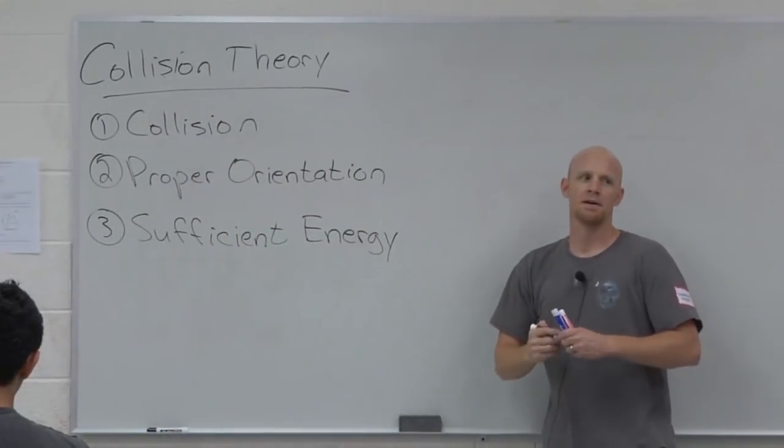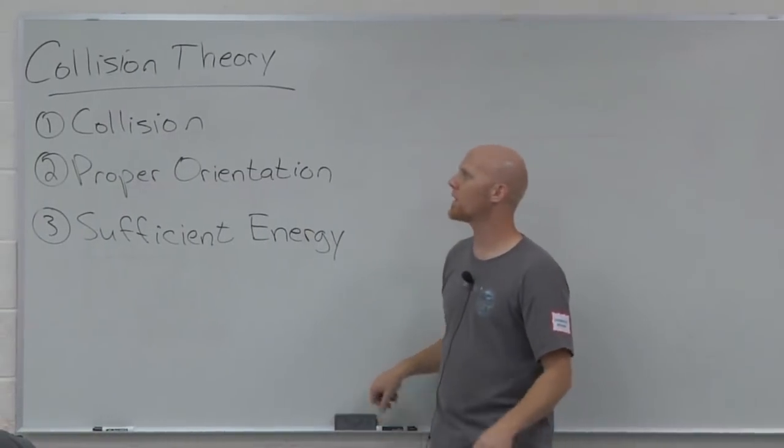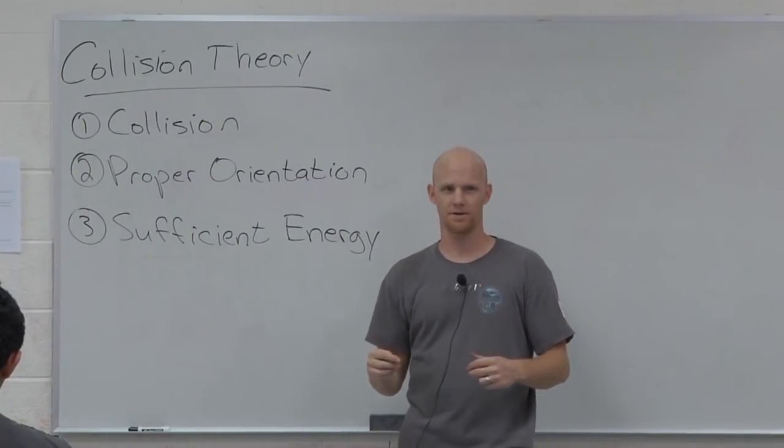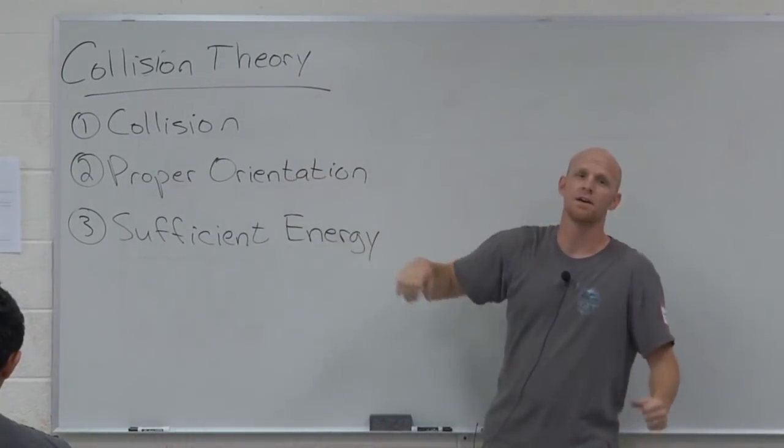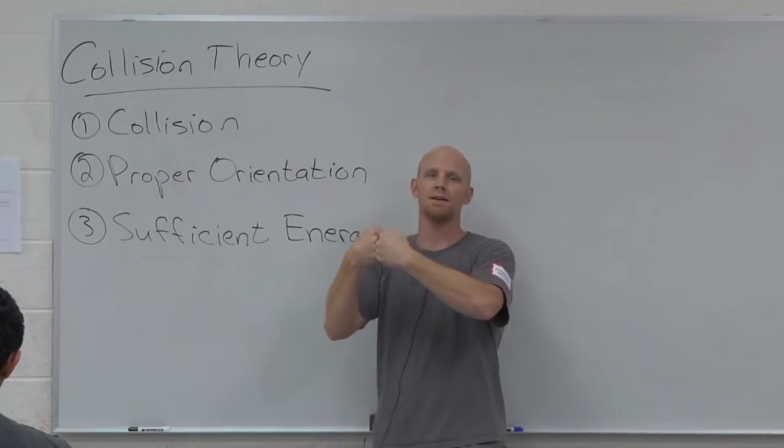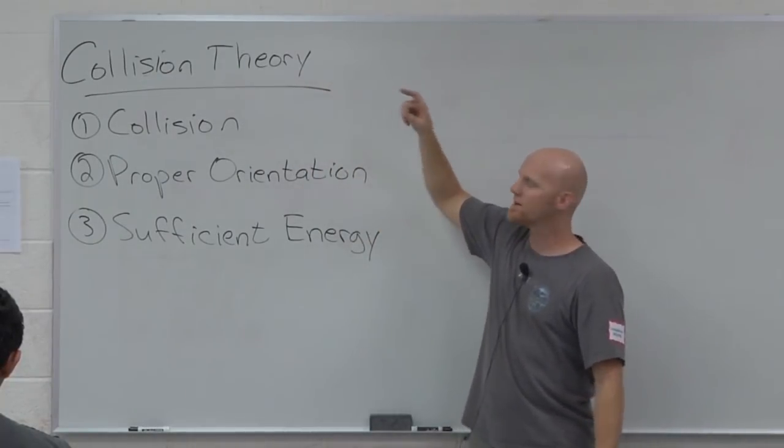So this is on your handout here. Collision theory basically describes the minimum requirements that must be met for a chemical reaction to occur. And it's these three things. If molecules are going to react in a chemical reaction, the first thing that must happen is those molecules must collide. There must be a collision between those molecules.